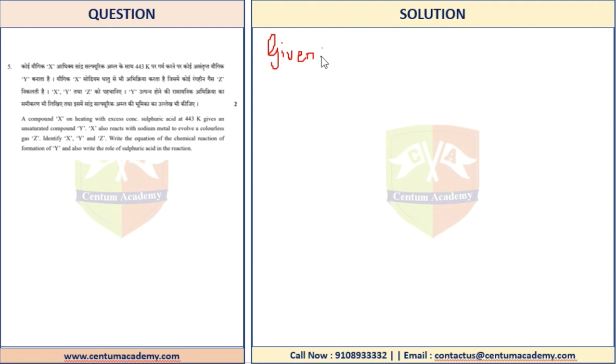So you simply mention the given parts. You say X on excess concentrated sulfuric acid - so X in presence of concentrated sulfuric acid at 443 Kelvin - actually ends up giving out an unsaturated compound Y. So Y, and I can make a small note below, I can say this is an unsaturated compound.